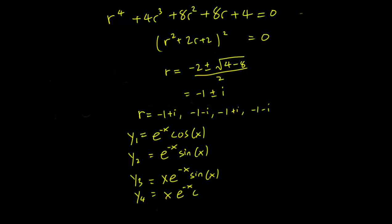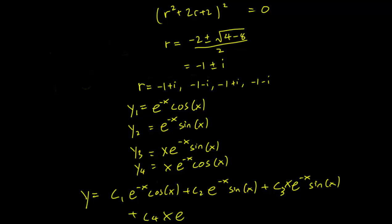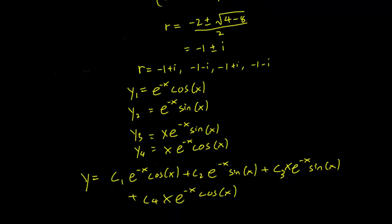So these are our four solutions and therefore our general solution is y = c₁e^(-x)cos(x) + c₂e^(-x)sin(x) + c₃xe^(-x)sin(x) + c₄xe^(-x)cos(x). That will be our general solution.